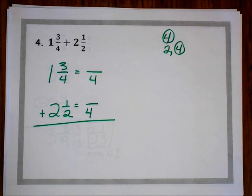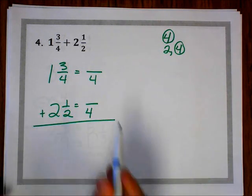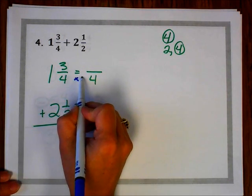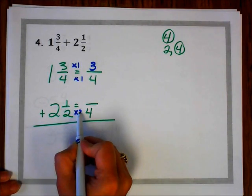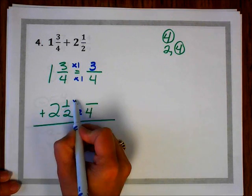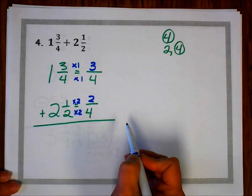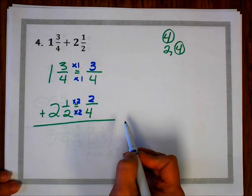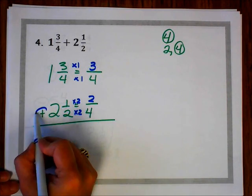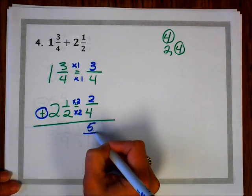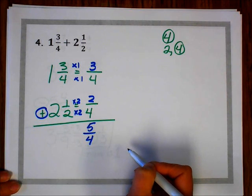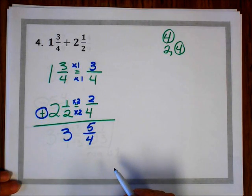Now we need to find our equivalent fractions. I know that 4 times 1 is 4, so 3 times 1 is 3. 2 times 2 is 4, so 1 times 2 is 2. Always look to see what operation you need to use — it is addition for this problem. So 3 fourths plus 2 fourths is 5 fourths. Now we add our whole numbers: 1 plus 2 is 3. Now we need to see if we can simplify.